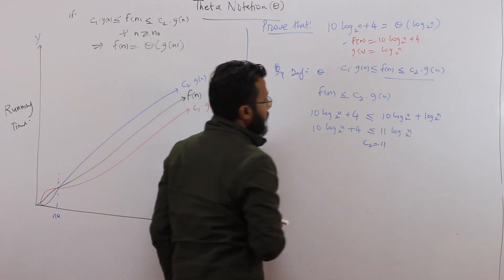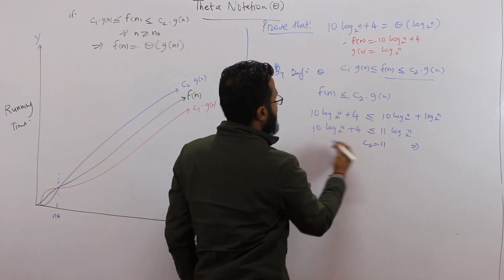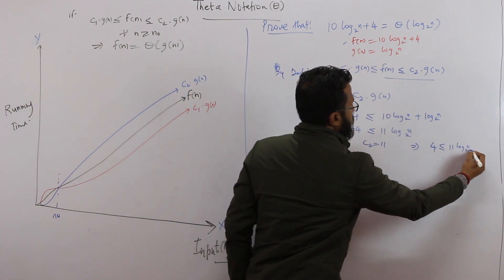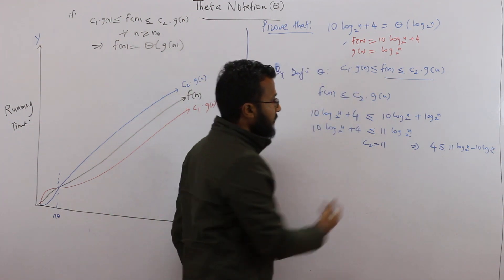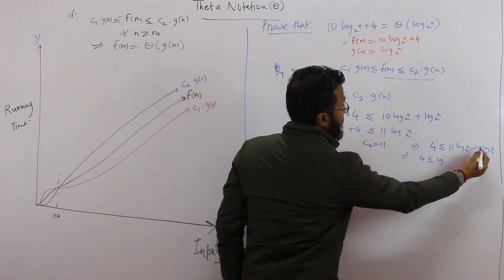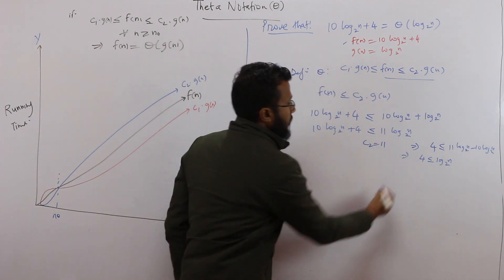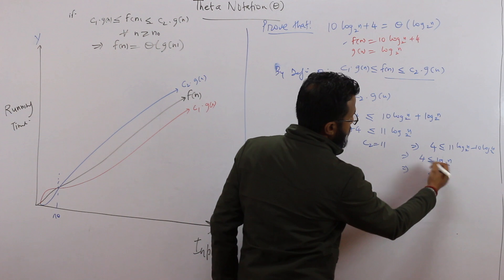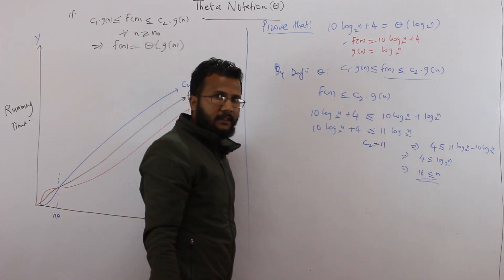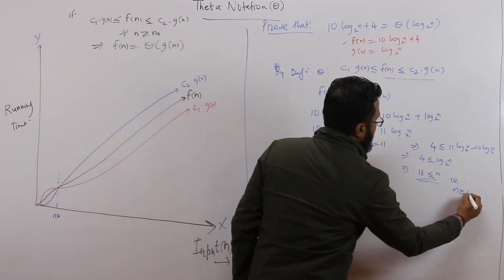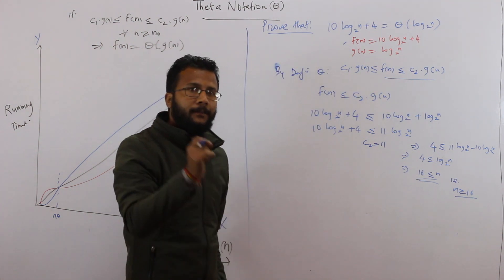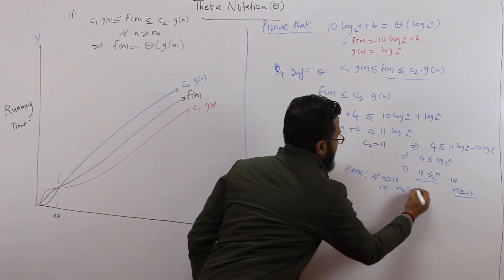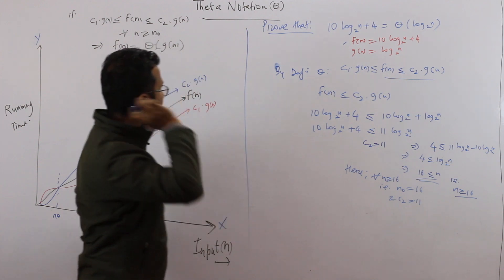Now we need to find n₀. Solving the inequality: 10·log₂(n) + 4 ≤ 11·log₂(n) gives us 4 ≤ log₂(n). By the property of logarithms, this means n ≥ 2⁴ = 16. So this is true for all values of n ≥ 16. Therefore n₀ = 16 and c₂ = 11.